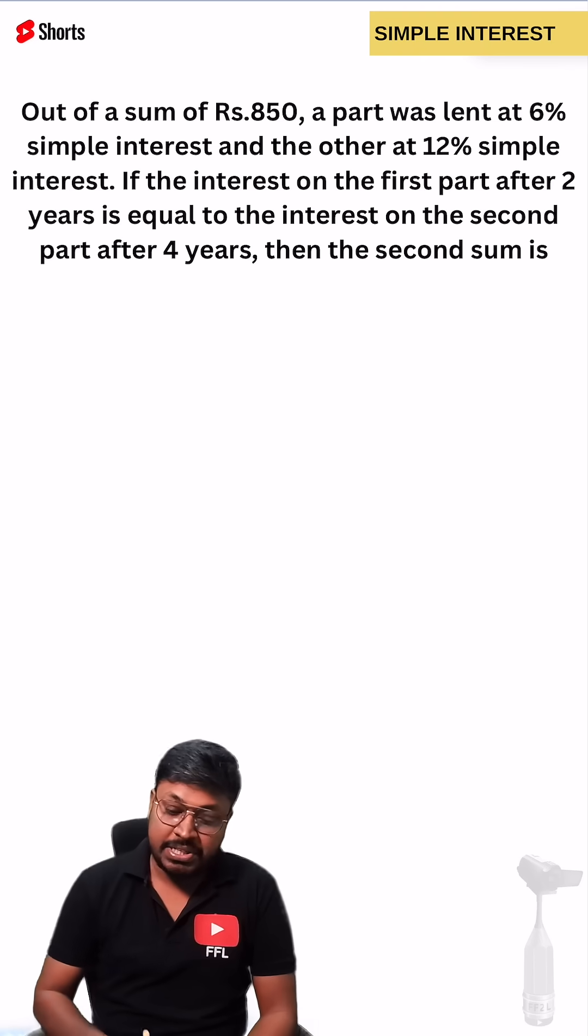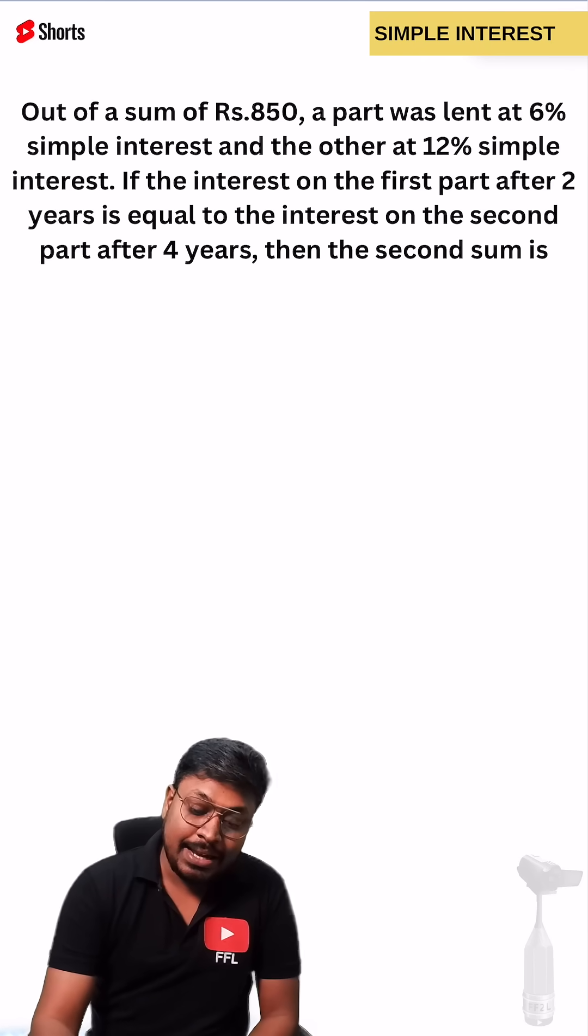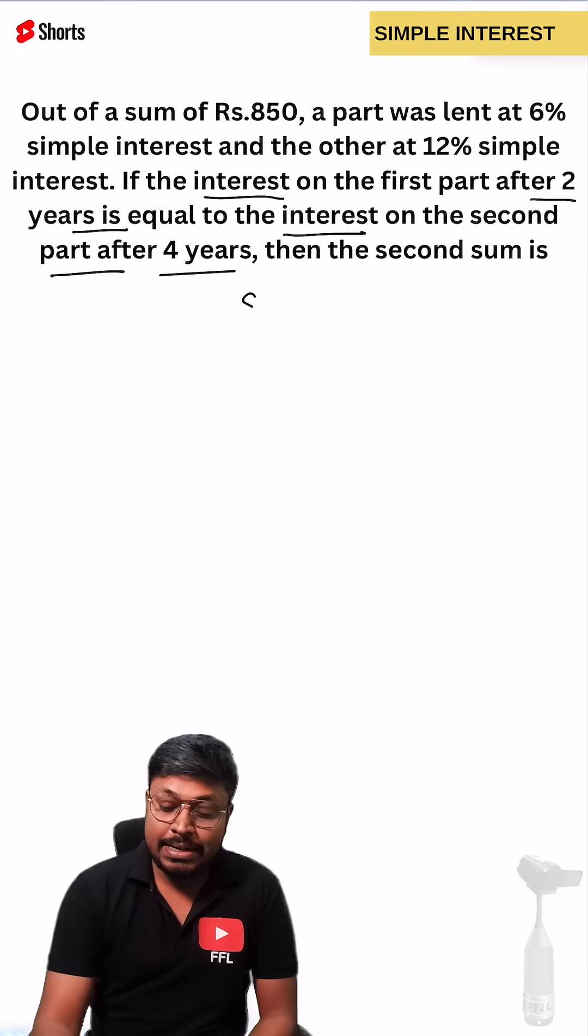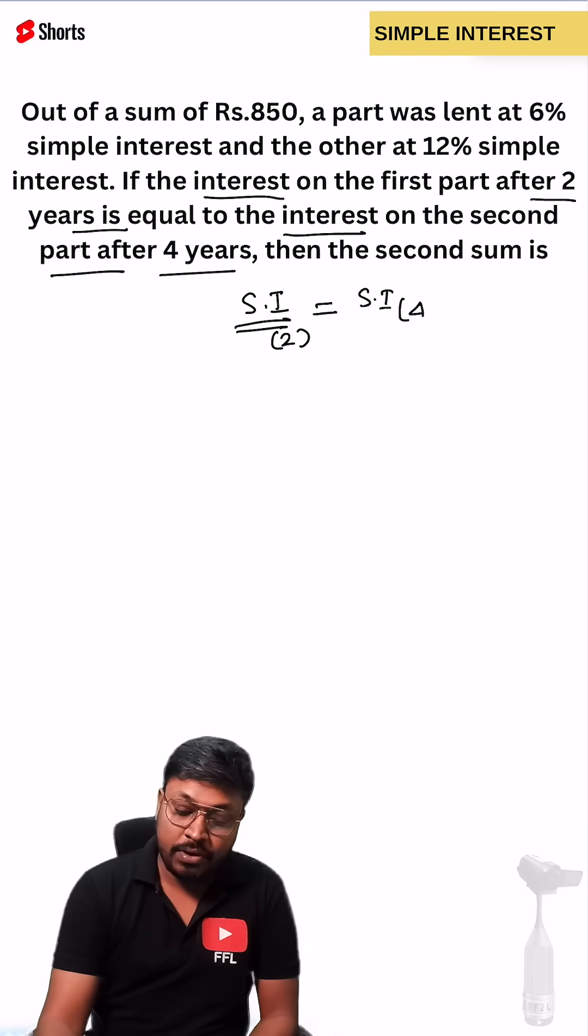The clue is directly given in the question because here you can see the interest on first part after two years is equal to the interest of the second part after four years. Here you can see both the interests are getting equal. So first simple interest for two years equals the second simple interest for four years.